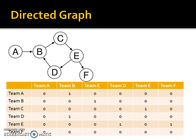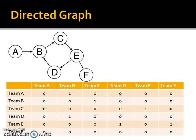What we could do is represent as an adjacency list. So an adjacency list specifies the vertices that are adjacent to each of the vertices on the graph. We've got five vertices there and these are the adjacent vertices. So one is adjacent to two, three, four. Two to one, four. Three to one, four, five, and so on.